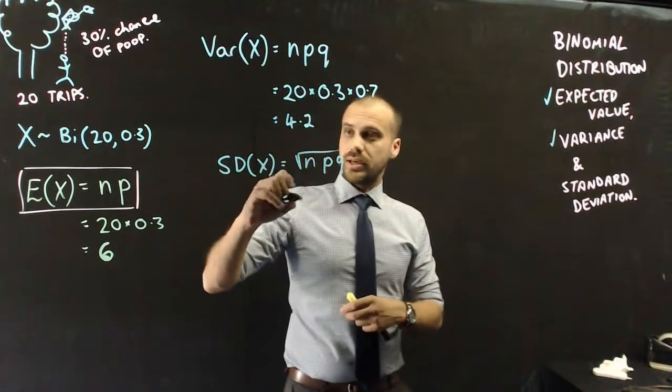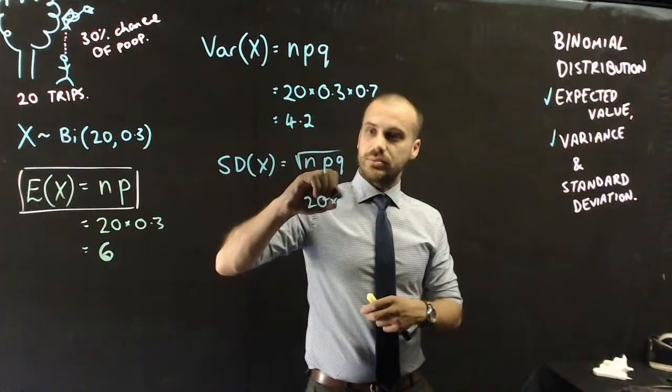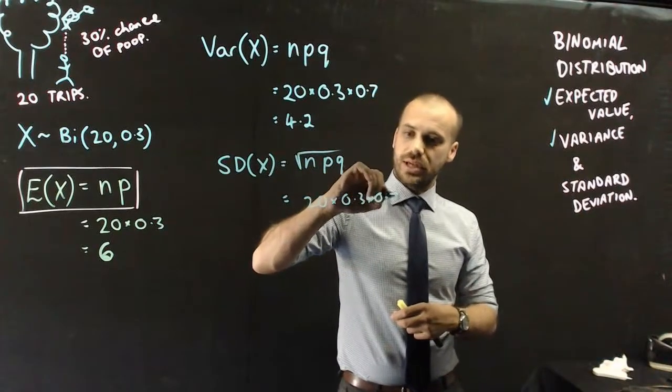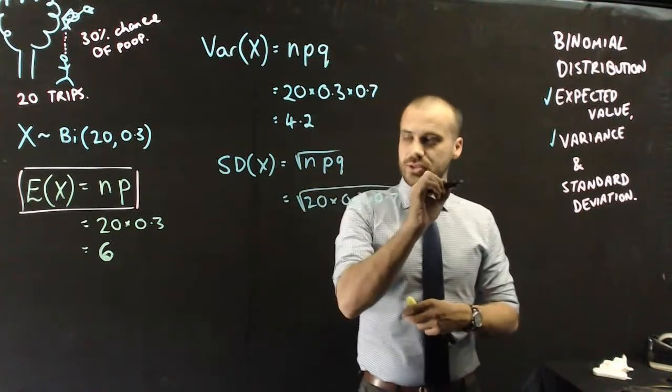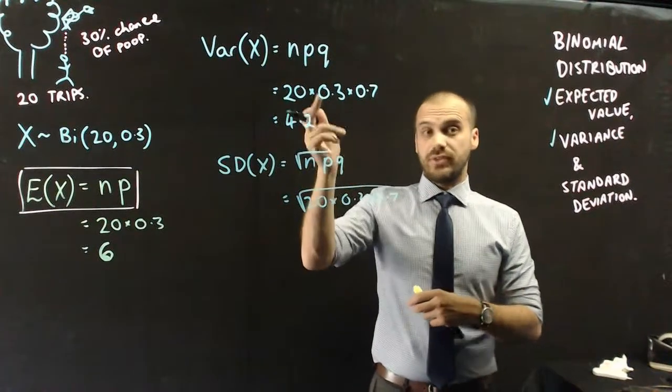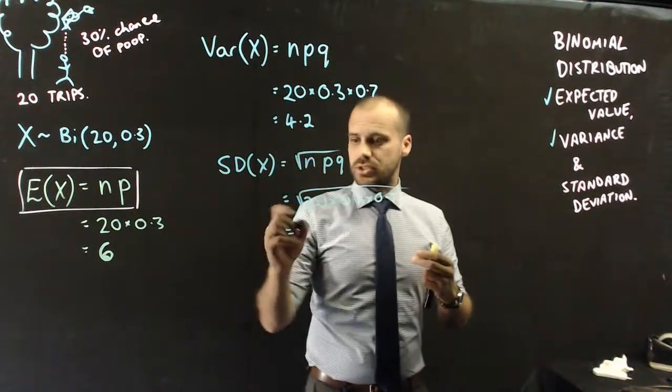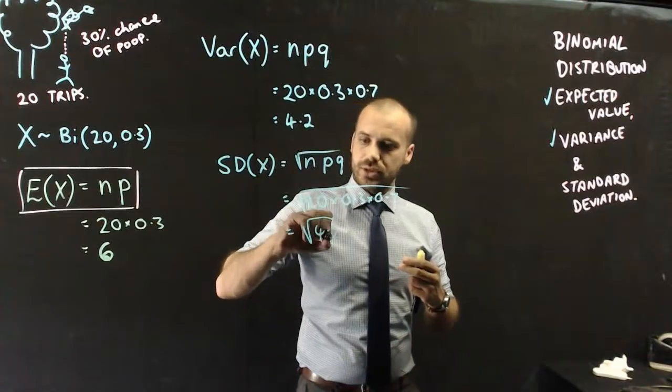Now, I already know what NPQ are. It's 20 times 0.3 times 0.7. And then, it's the square root of that. So, standard deviation is just the square root of the variance. So, square root of 4.2.